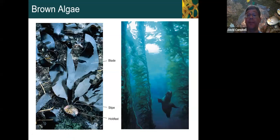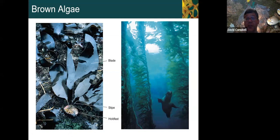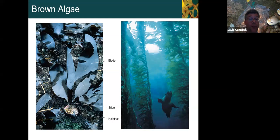Brown algae are large seaweed-type algae rather than the one-celled things, including the very largest seaweed, kelp. We already mentioned sargassum — that's another brown algae, and unusually it is able to keep growing when pieces break off from the base.